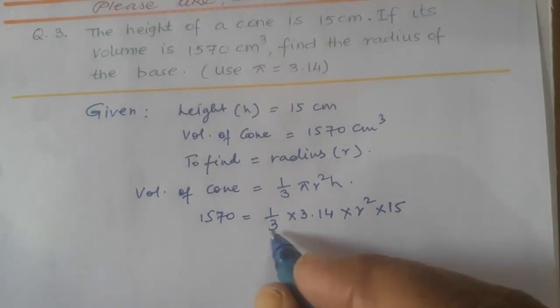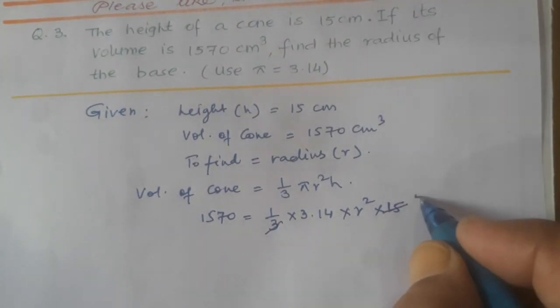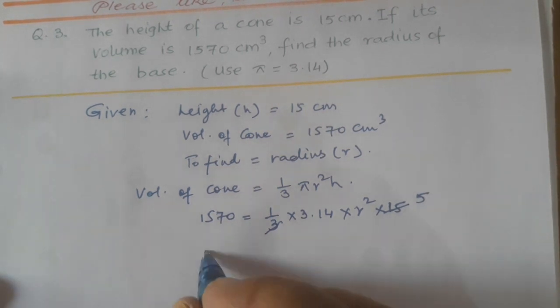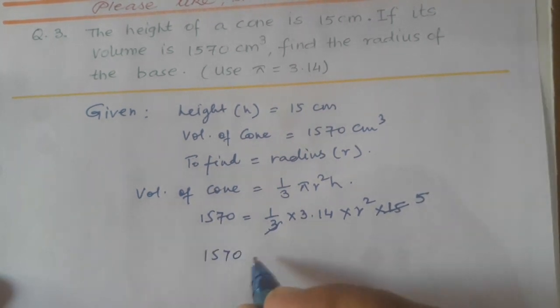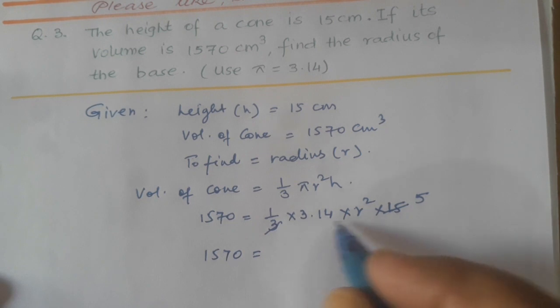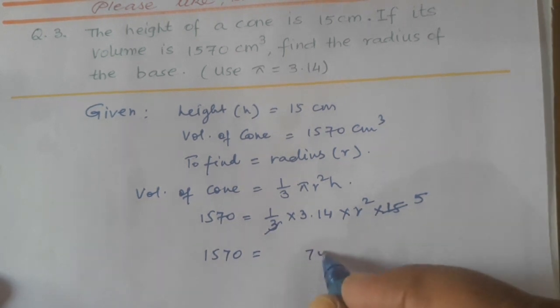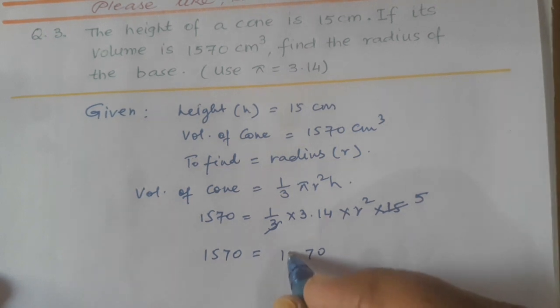Now we'll cut by 3. This becomes 5, now becomes 15.70. Multiply by 5: 14, 5 times 70, 5 times 15 is 15.70.